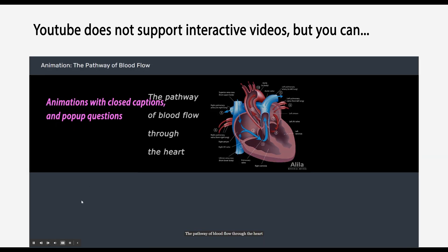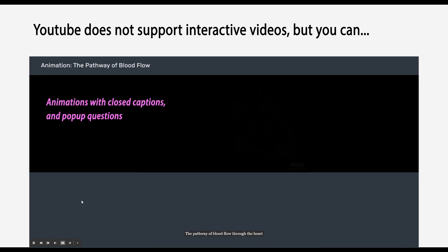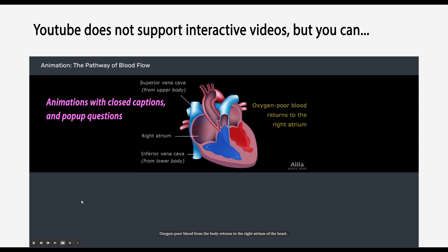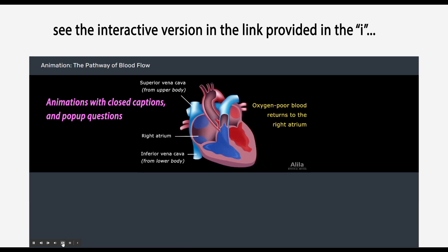The pathway of blood flow through the heart. Oxygen-poor blood from the body returns to the right atrium of the heart. Blood from the upper body returns through the superior vena cava. Blood from the lower body returns through the inferior vena cava.